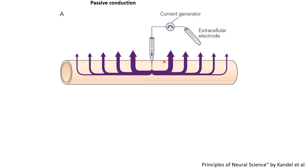Since some current is flowing out at each point, a lesser amount of current reaches the next point, and again some flows out, so even lesser current reaches the point beyond. The farther we go from the point of injection, the less current is available to flow out through the membrane. This current flowing through the membrane charges the membrane and changes the membrane potential. So the final value of membrane potential reached closer to the point of injection would be higher compared to the final value reached farther away.